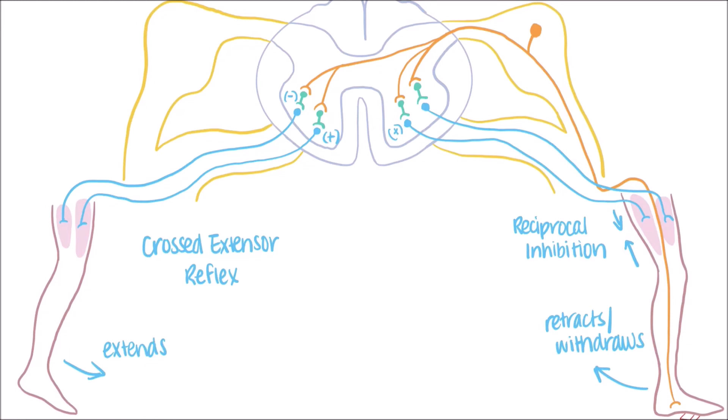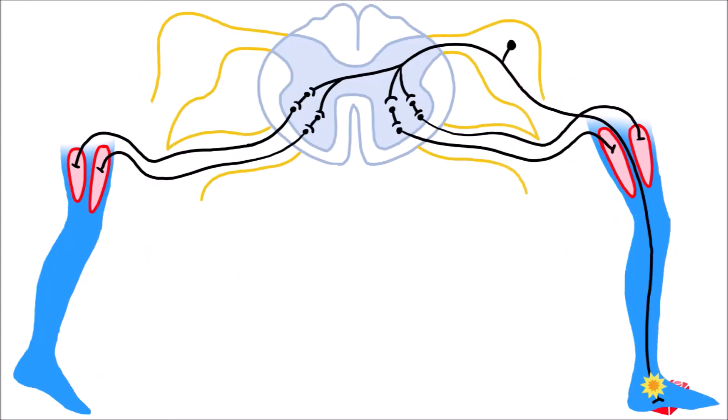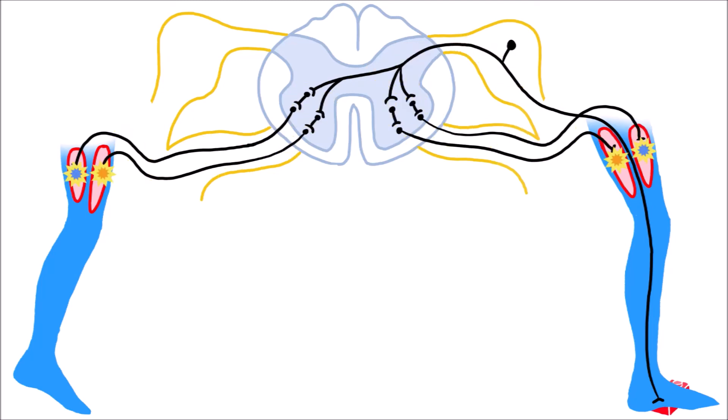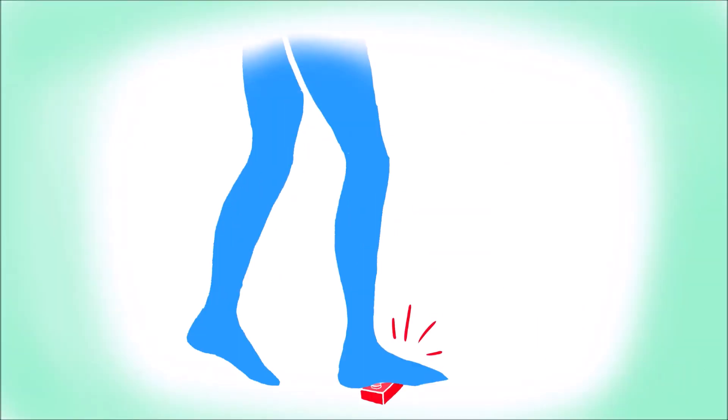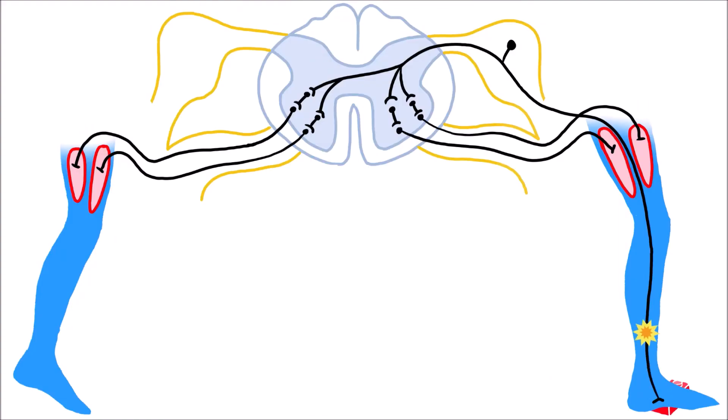Let's see what this looks like in an animation. The foot on the right steps on the Lego brick, which stimulates nociceptors to fire impulses. These impulses travel up through a slow-conducting afferent sensory neuron and synapses with multiple interneurons in the spinal cord.